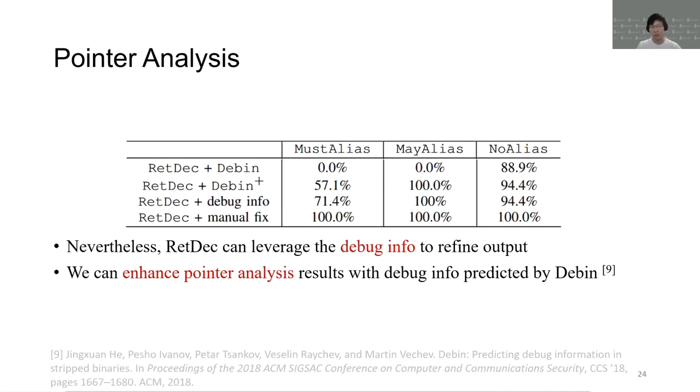Nevertheless, Reddeck can leverage debug information to refine its output. Thus, we are able to enhance pointer analysis results with the help of advanced methods in reverse engineering. For example, DB, which published in CCS18, can be used to predict the debug information for stripped boundaries.